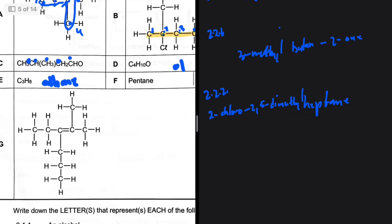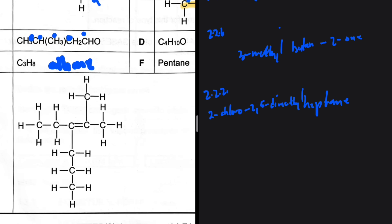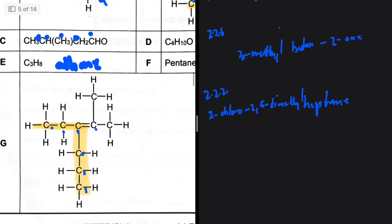Question 2.2.3: the IUPAC name of compound G — an alkene. We need the longest carbon chain that includes the functional group. Counting various paths: one, two, three, four, five, six. Taking the route through the double bond gives us six carbons, so the parent chain is hexene.